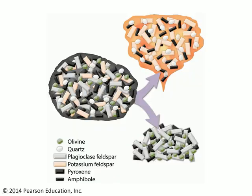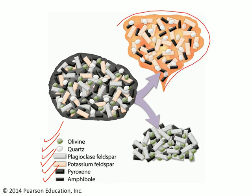If we have a source rock which is full of minerals like olivine, quartz, plagioclase feldspar, potassium feldspar, pyroxene, and amphibole, and we subject it to some sort of intermediate temperature conditions, the potassium feldspar, the amphibole, and the quartz are all going to melt, whereas the plagioclase, the pyroxene, and the olivine are all going to stay solid because the rock never got hot enough for them to melt. In this way, we've separated our original source rock into two final rocks.